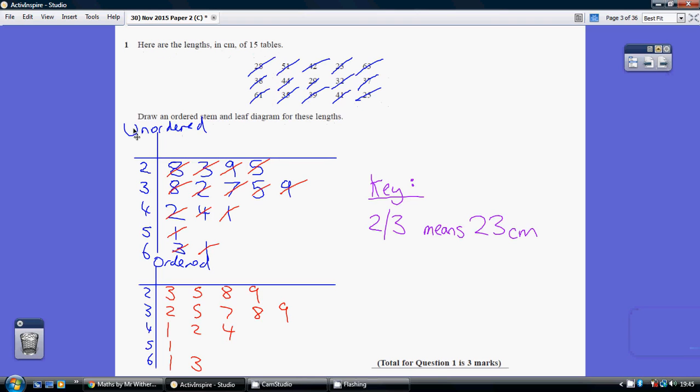Start off by doing an unordered stem-and-leaf. Set up your stem with the tens column, so you've got 2, 3, 4, 5, and 6. Just work your way through the list: 28, 51, 42, 23, 63. Basically work your way through the whole list, put a line through each one to make sure you include them all.